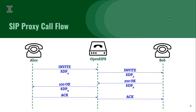Probably most of you know how a SIP call looks like. So we have Alice, Bob, and an OpenSIPS server usually inside it. When you start the call, you send an invite to OpenSIPS, but since we don't handle media at all, we just forward it to Bob with the very same SDP.